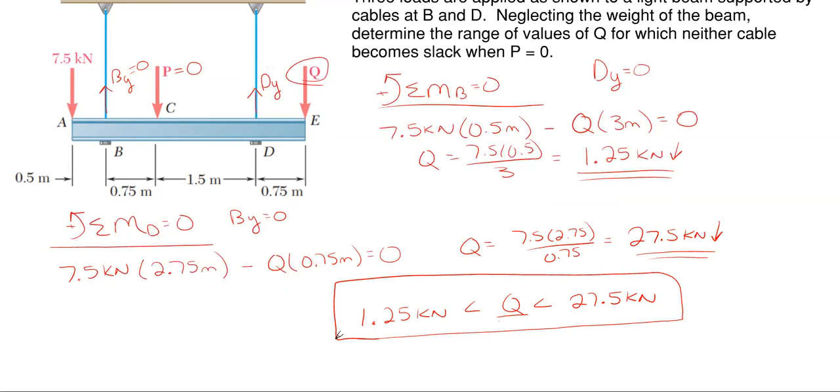Anything less than 1.25, well, DY is no longer in tension. Or exactly as 1.25 is no longer in tension. And then exactly at 27.5 kilonewtons, B sub Y is no longer in tension. So that is my range. And that's how you would work that problem.